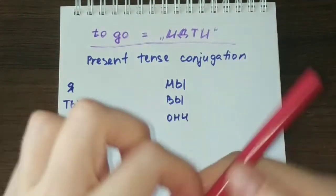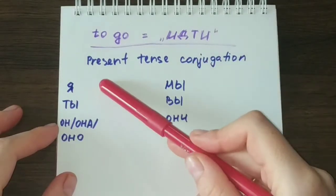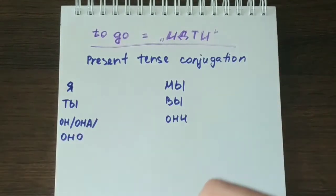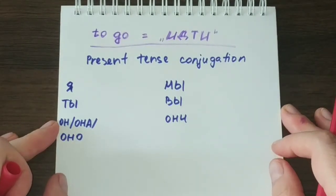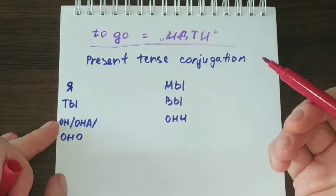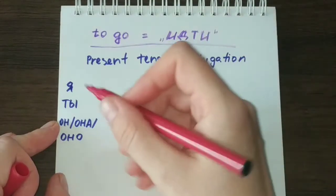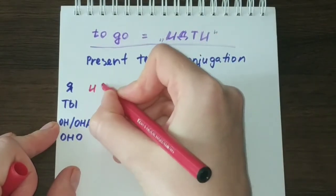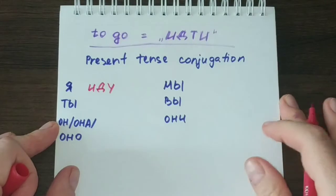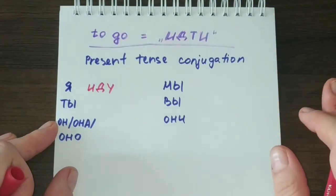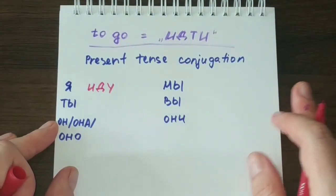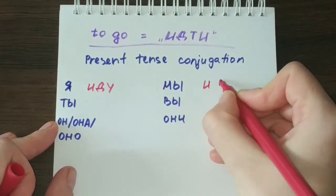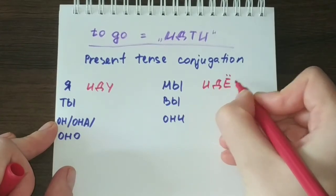Now let us see the way the verb идти changes according to these different pronouns. To say I go, you will have to conjugate the verb accordingly. In the first person singular it will be я иду. The first person plural will be we go, мы идём.